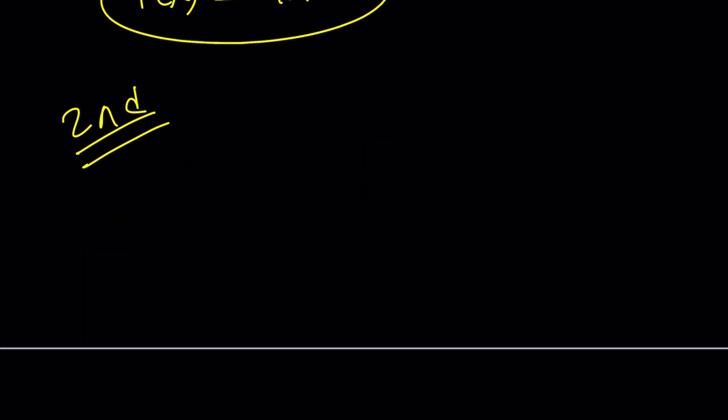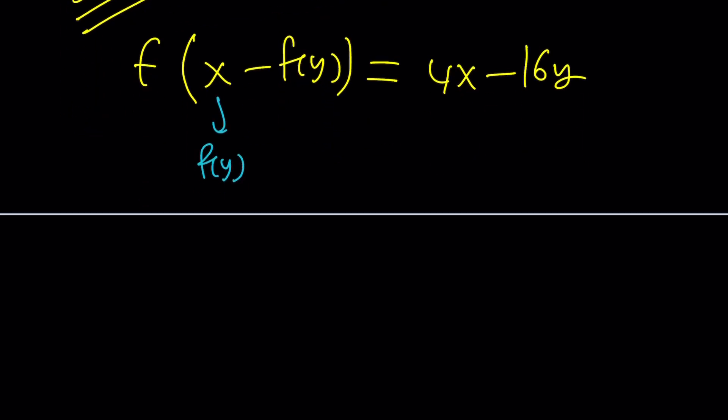For my second method, and let me rewrite the original problem, f(x - f(y)) = 4x - 16y. Great. We're going to use a different approach. So, for the first method, we replace x with y + f(y). This time, we're going to do something even simpler. We're going to replace x with f(y). And there's a very good reason behind it, because that's going to give us f(0), which is a constant. A lot of times, getting f(0) is a good thing. Okay, so replace x with f(y).